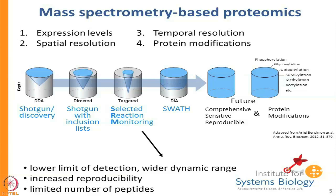SWATH is not quite as sensitive as SRM, but it analyzes essentially everything. Whereas DDA, SRM, and inclusion list methods select one peptide, fragment it, and interpret it, with SWATH you take big chunks of M/Z ranges containing hundreds or even thousands of peptides and fragment them all. So you have fragmentation information on pretty much everything in your sample, limited only by the sensitivity of the instrument.